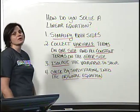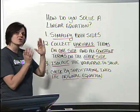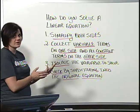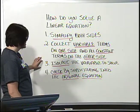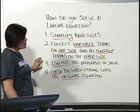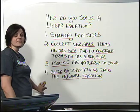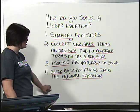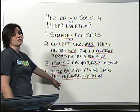Secondly, you're going to collect variable terms on one side of the equation and your constant terms on the other side of the equation and simplify again if you need to. Then you're going to isolate the variable to solve the equation. And finally, you'll check to see if that is actually the solution by substituting that value into the original equation.